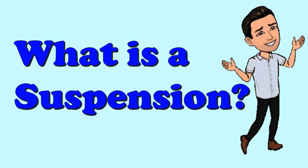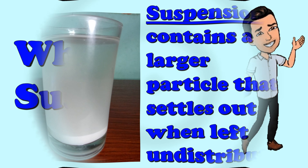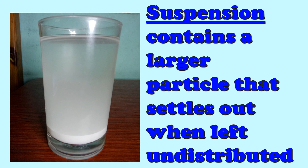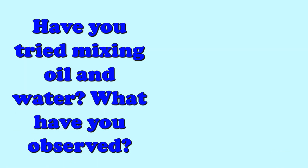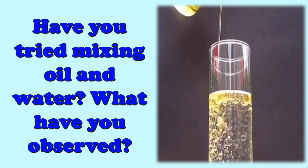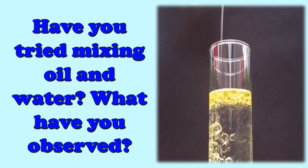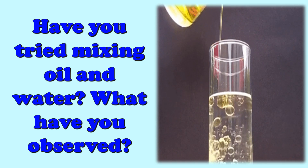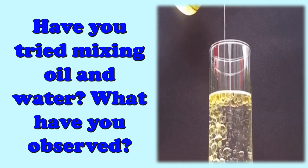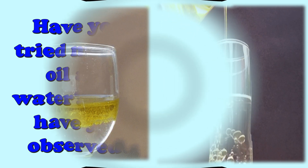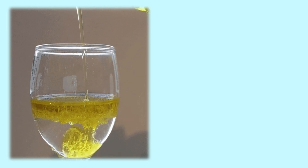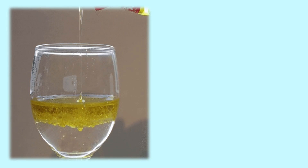What is a suspension? Suspension contains larger particles that settle out when left undisturbed, and it is a heterogeneous mixture. Have you tried mixing oil and water? What have you observed? A mixture of oil and water is a suspension. You can mix oil and water together and shake as hard as you like, but they will separate after some time. While water often mixes with other liquids to form a solution, oil and water do not.